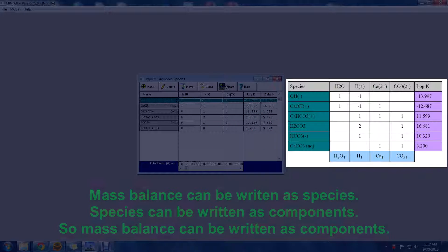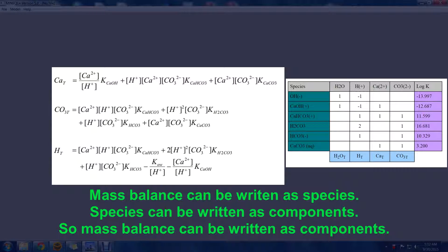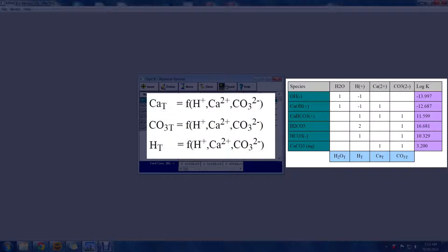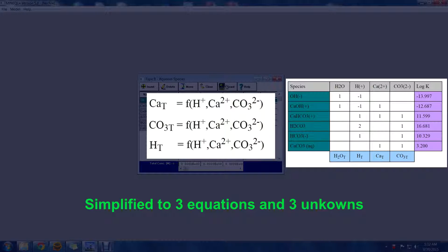Since each species can be written in terms of its components, this means that each mass balance equation can also be written in terms of its components. This can be understood in a more simplified form by stating that each of the mass balance equations are now a function of proton, calcium, and carbonate.